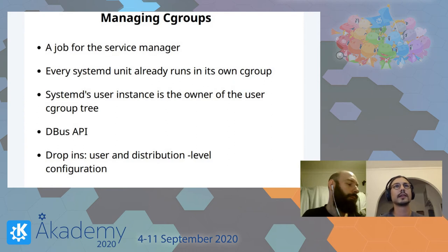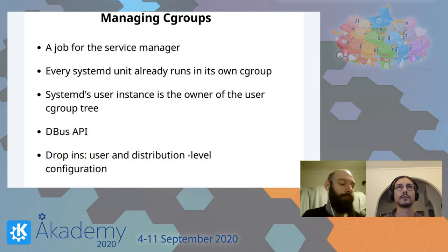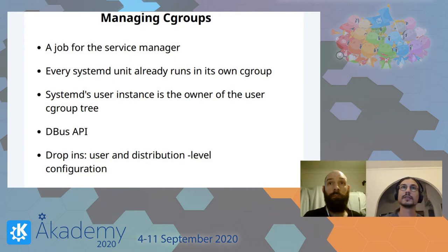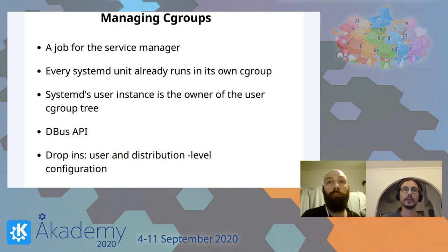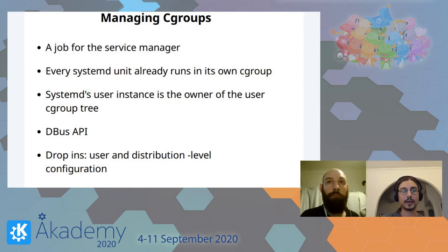Technically, the cgroup API can be controlled through a simple filesystem interface inside sysfs, but you'll soon need a central daemon to manage the creation and attaching of processes to cgroups. The good news is that systemd has been supporting cgroups since forever — every systemd unit that systemd launches is inside its own cgroup. systemd is also capable of delegating management of the control group tree to your user through its systemd user instance, which is basically a second systemd running as your user.